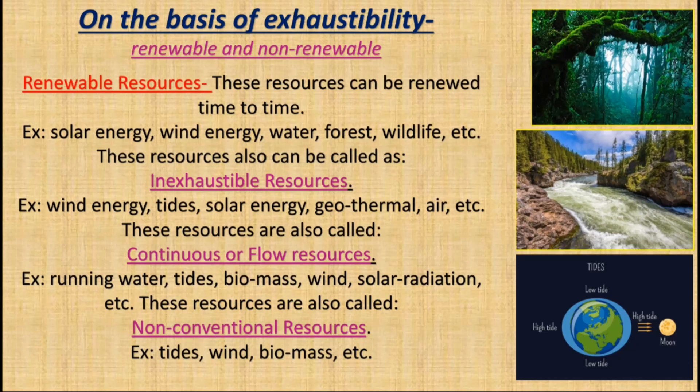A resource which is neither renewable nor non-renewable, and must be used where it occurs and replenishes itself, is a flow or continuous resource. Natural resources like solar radiation, running water, tides, biomes, and wind are called flow or continuous resources.